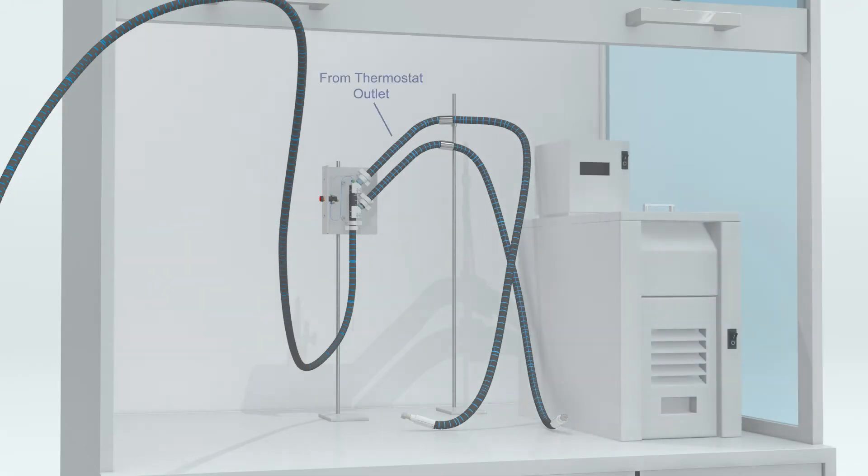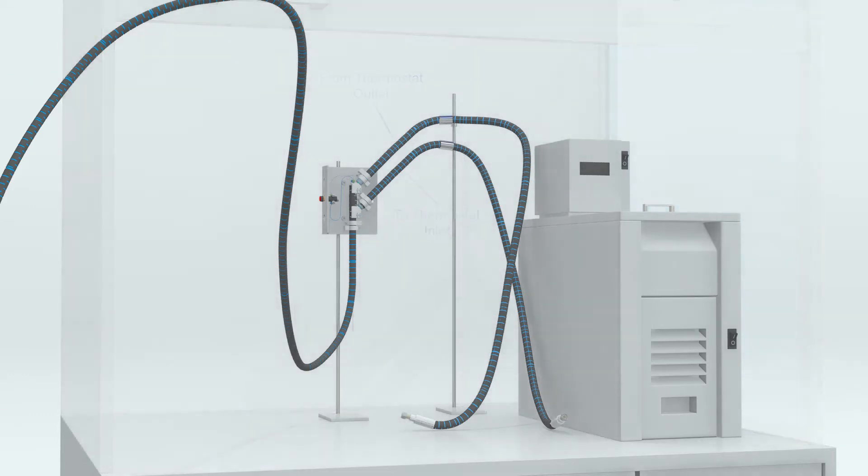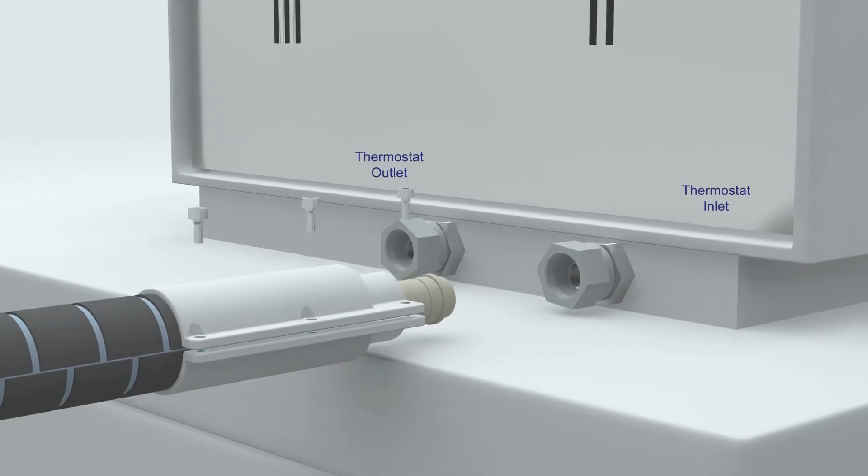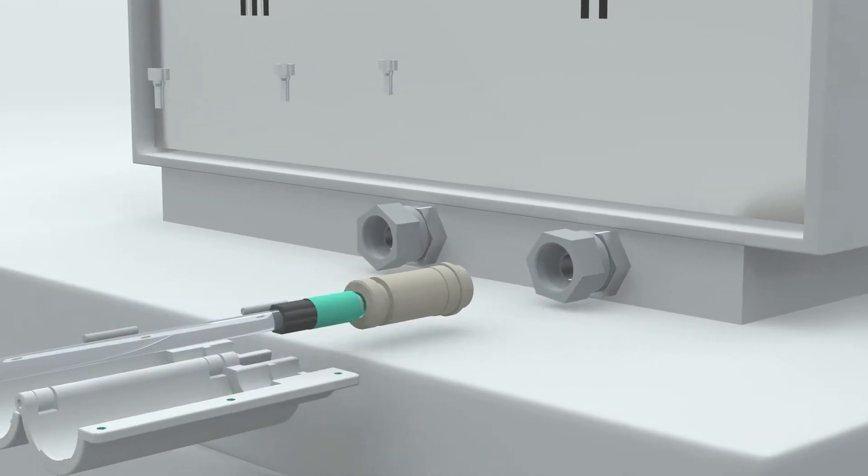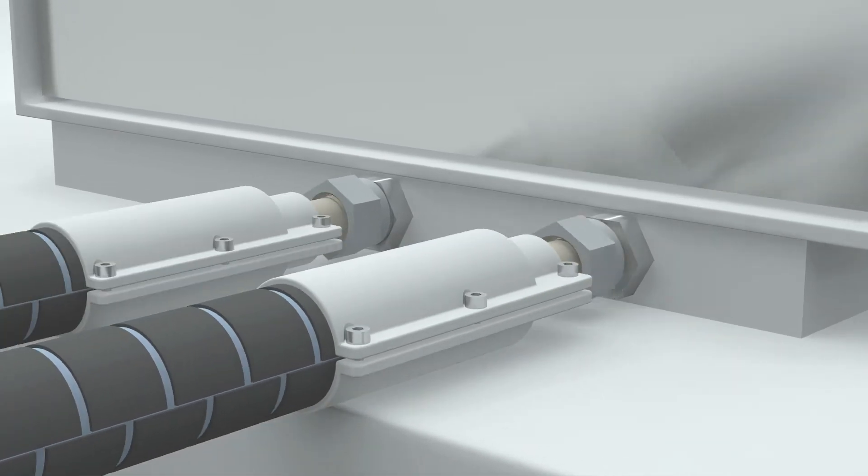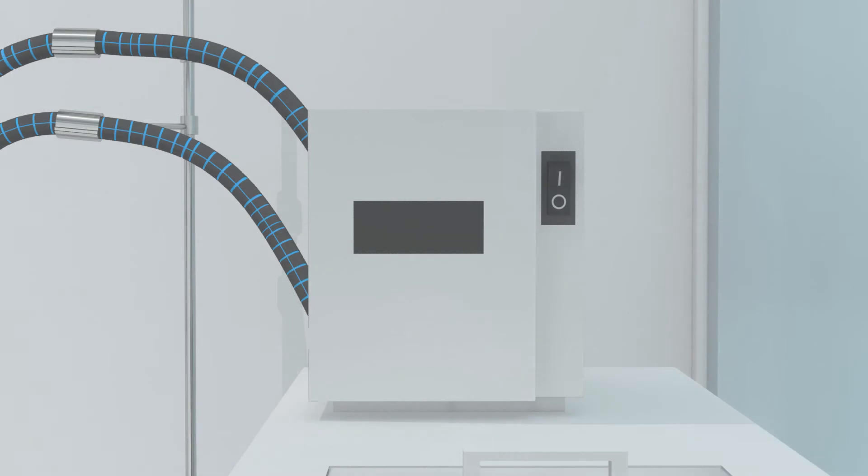Optionally, connect the thermostat to the inlet and outlet of the temperature control lines, shown here in detail at the rear of the thermostat unit, with the connections for both the inlet and outlet. Once this is done, switch the thermostat to ON and set the thermostat to the target temperature and wait until it is reached.